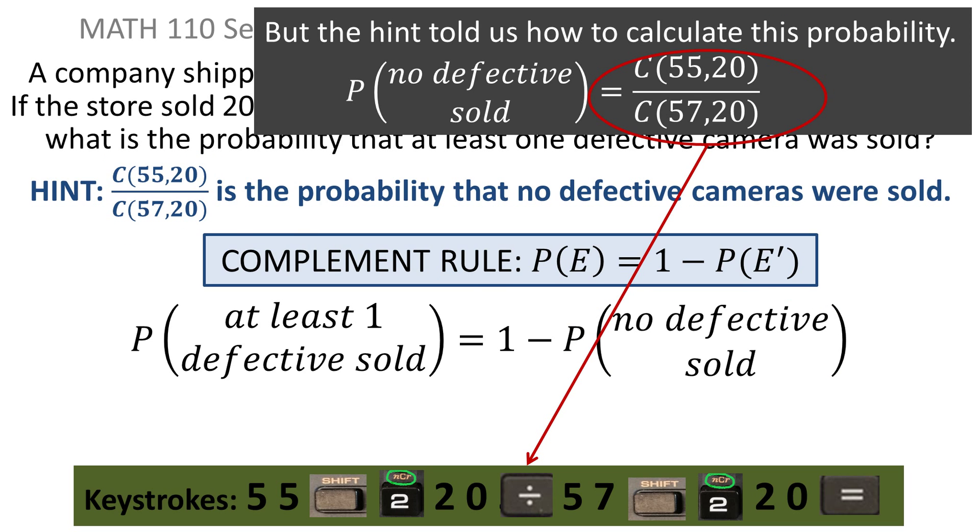For your calculator keystrokes, I'll go through. I hope you've practiced enough by now that this is not an issue. But you simply take the 55, enter it in your calculator. The combination is Shift-2, then you want to put in the 20. That's in the numerator. You want to divide that by, now going down bottom, you take the 57, and you want to do the combination again down bottom, that's Shift-2. You're taking it 20 at a time, so you enter 20, and you press equal.